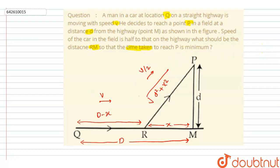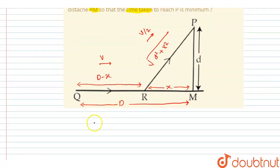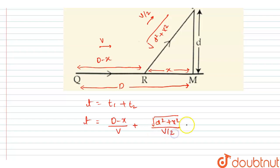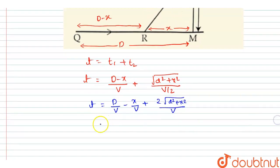We want the minimum time, so the total time T = T1 + T2, which equals (d minus x)/v plus (√(d² + x²))/(v/2). This simplifies to: T = d/v − x/v + 2√(d² + x²)/v.